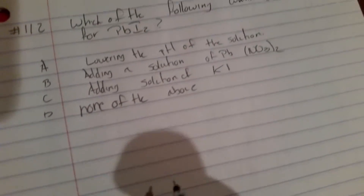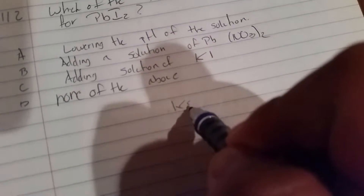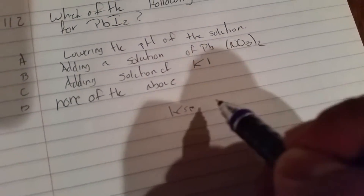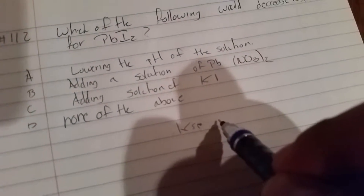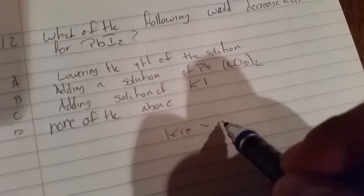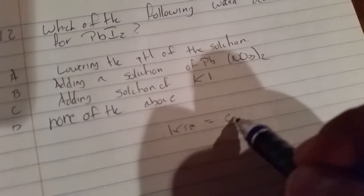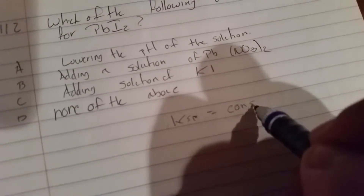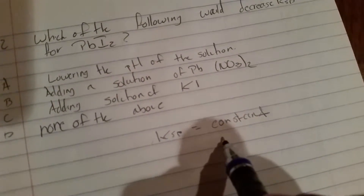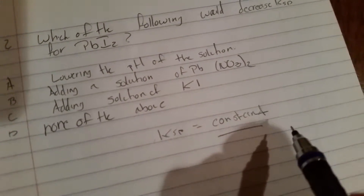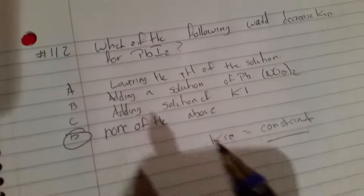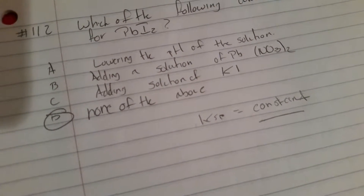Well, we know that Ksp is and always has been a constant. And constants don't change. So the answer would be D, none of the above.